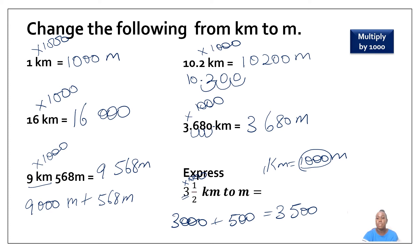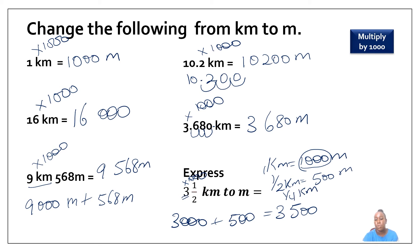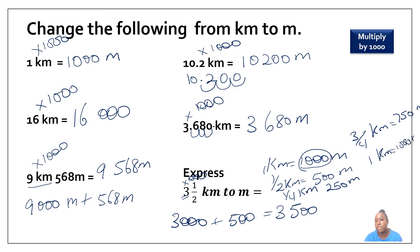One kilometer is equal to one thousand meters, so therefore a half kilometer will be equal to five hundred meters. What about a quarter kilometer? A quarter kilometer will be equal to two hundred and fifty meters. What about three-quarter kilometers? Three-quarter kilometers will be equal to seven hundred and fifty meters. And one kilometer again is equal to one thousand meters.